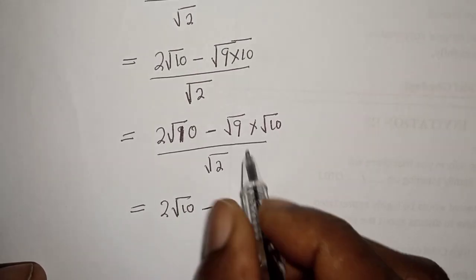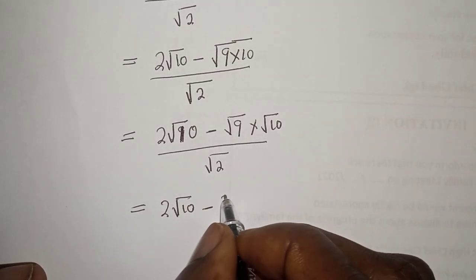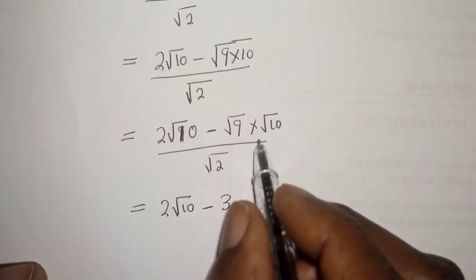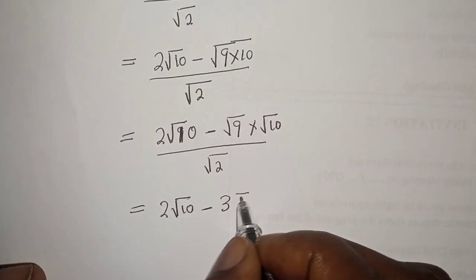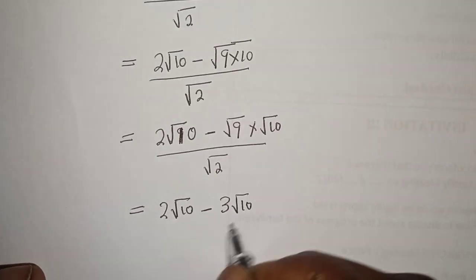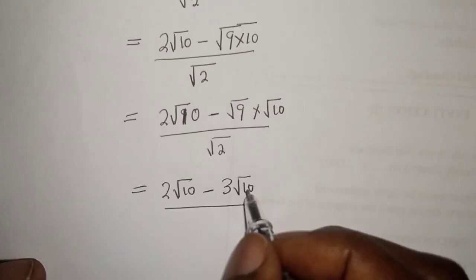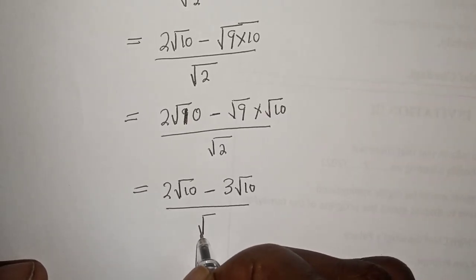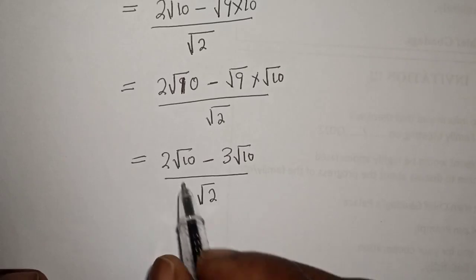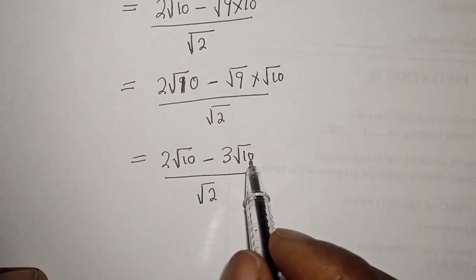Equals 2√10 minus, square root of 9 is 3, multiply by √10. This is √10 over √2.